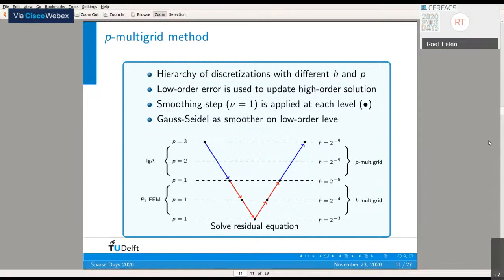Since we have standard linear basis functions there, we just apply a standard H-multigrid method with Gauss-Seidel as a smoother. Once we obtain this coarse-grid correction, we update our solution on the high-order level to conclude our V-cycle.